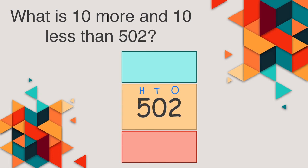502. 10 more than 502 is 512. 10 less than 502. Look at 2 digits together. 50. So 1 less than 50 is 49. So 10 less than 502 would be 492.